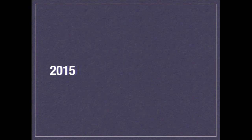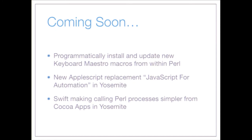That was my 20-minute talk. Looking ahead to 2015: Keyboard Maestro recently gained the ability to programmatically add and manipulate macros, enabling meta-programming with Keyboard Maestro from Perl — which is awesome. There's a new AppleScript replacement called JavaScript for Automation in Yosemite, which will produce interesting things. And there's a new language called Swift which should make calling Perl processes simpler from Cocoa apps, moving more into the higher space.